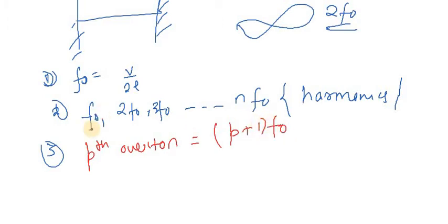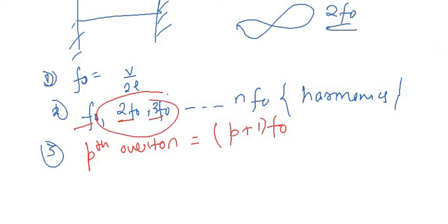To find the pth overtone of an open organ pipe, it is (p+1)f₀. We add one because the overtone numbering starts from the second harmonic — so the 1st overtone is 2f₀, and so on.